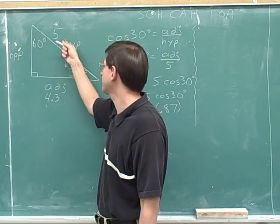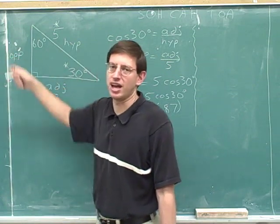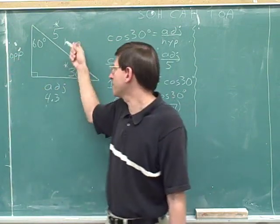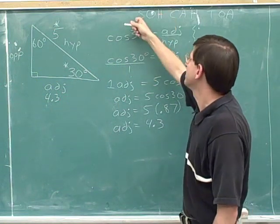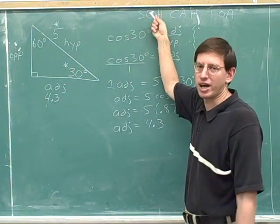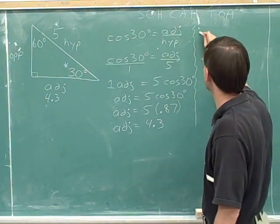So we need to use the information about the hypotenuse to find the opposite side. Which trig function deals with the hypotenuse and the opposite side? Well, that's the sine. The sine deals with opposite and hypotenuse. So let's write down our sine.